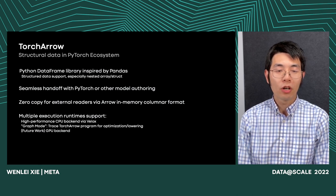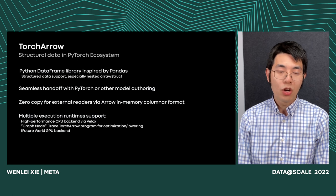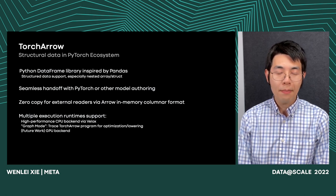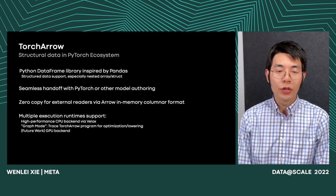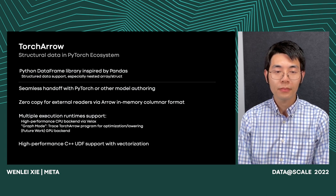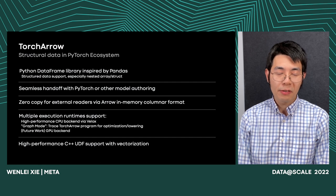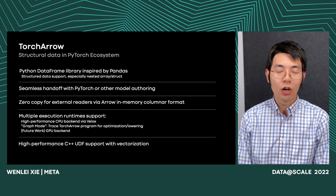Similar to PyTorch, TorchArrow supports multiple execution runtimes. It has a high-performance CPU backend via Velox. We also have a graph mode, which allows us to trace a TorchArrow program into an IR, making optimization and future lowering to other engines possible. As future work, we want to support a GPU backend, as GPU preprocessing co-located with the trainer is very important. Finally, by integration with Velox, it provides high-performance C++ UDF authoring support.